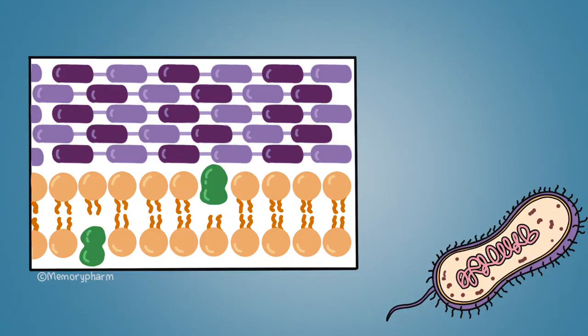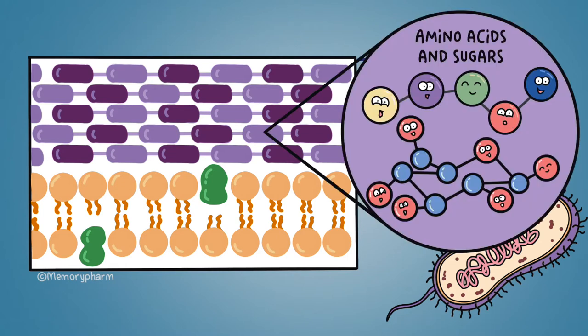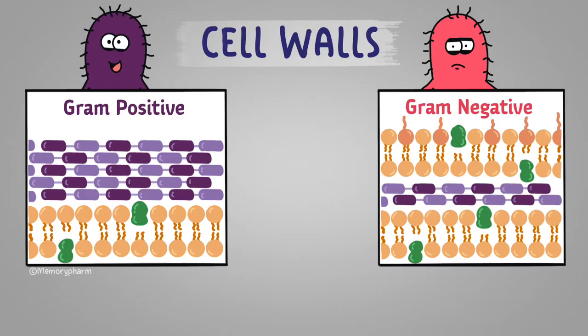Bacterial cell walls are made of a substance called peptidoglycan. It's made up of a polymer of amino acids and sugars that serves a fundamental role in the structure and integrity of the cell. The bacterial wall is there for the same reason our skin is there — to keep the insides in and the outsides out. Bacteria differ, though, in the types of walls they have.